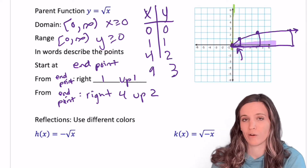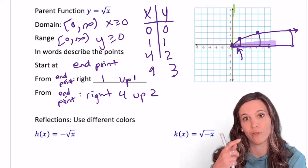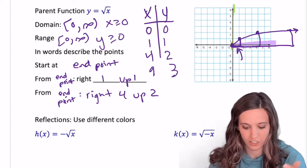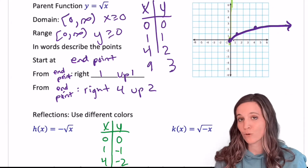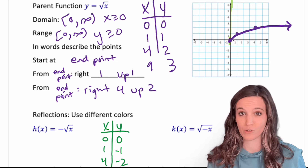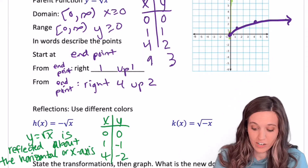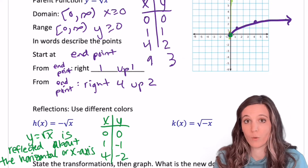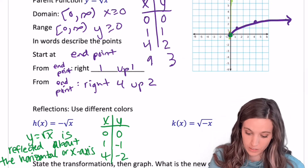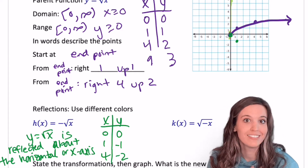h of x equals negative square root of x. We know a negative sign reflects us about the x-axis — let's prove it with a table. The reflection over the x-axis affects the y-values, making them negative. So from the endpoint 0, 0: go right 1, down 1 instead of up 1. Back to the endpoint: right 4, down 2.